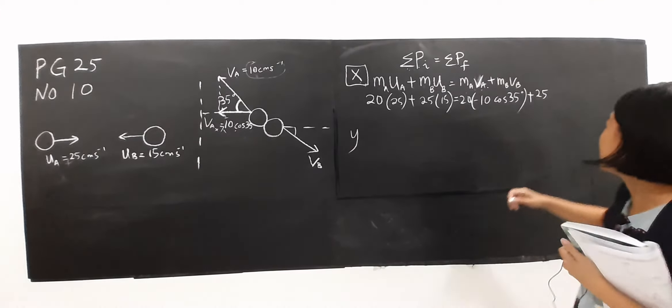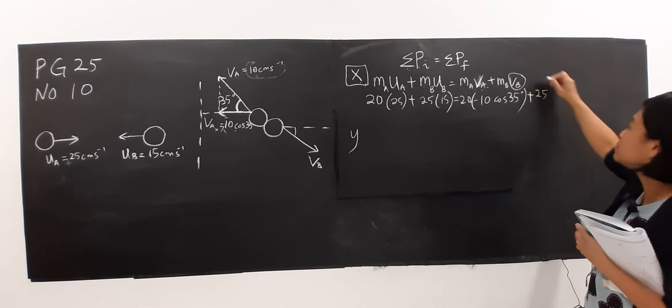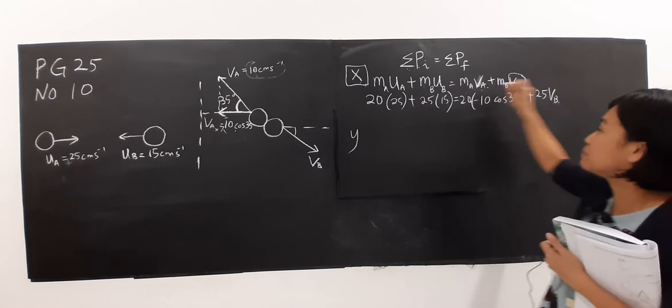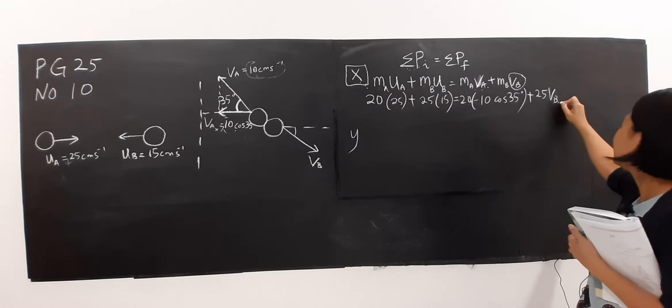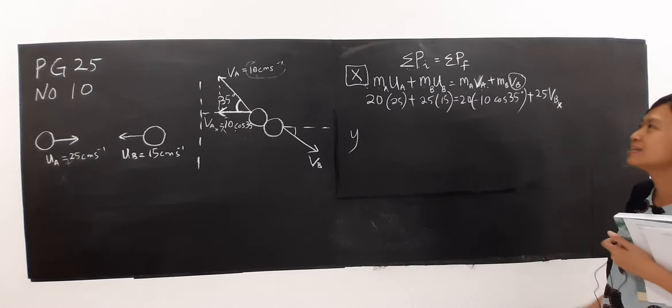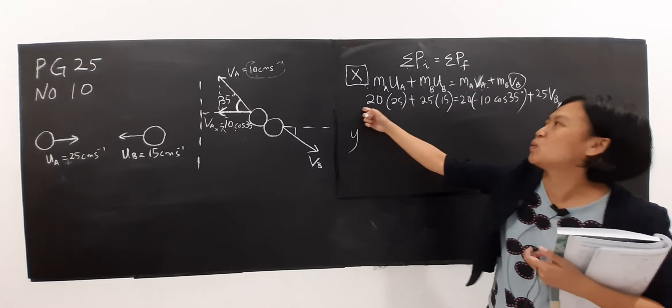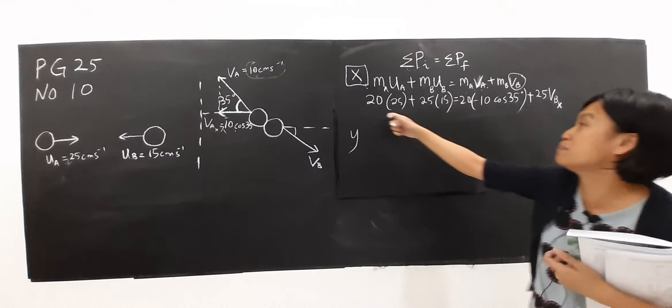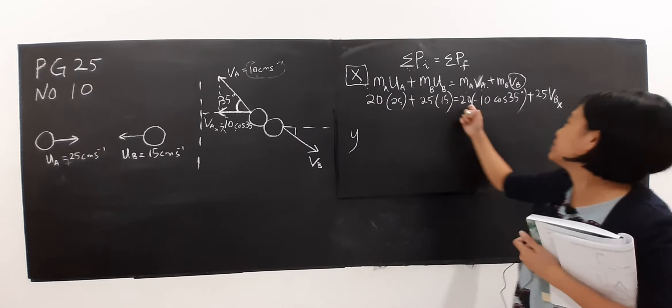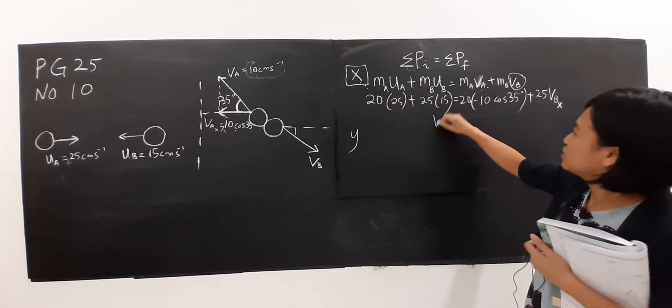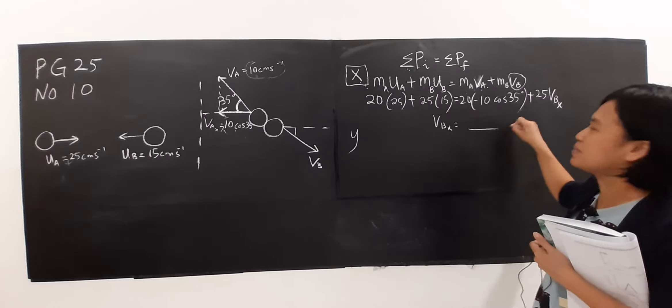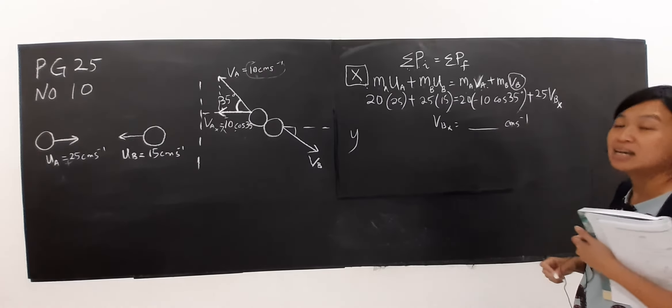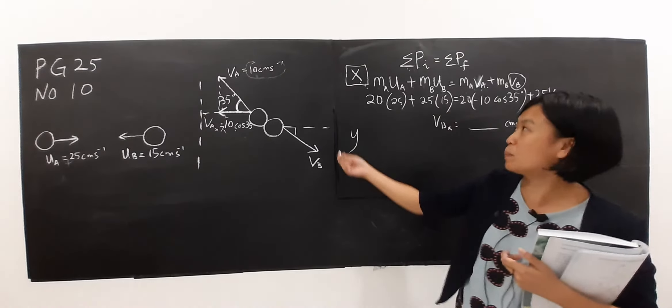How about MB? MB is 25, then the value of VB or this angle I don't know. So what do I do? I just leave VBX as an unknown. From here you can solve this, you can simplify the value that I know, so from here you can find the value of VBX in this unit.